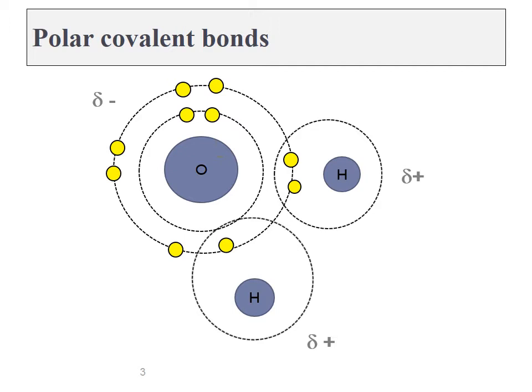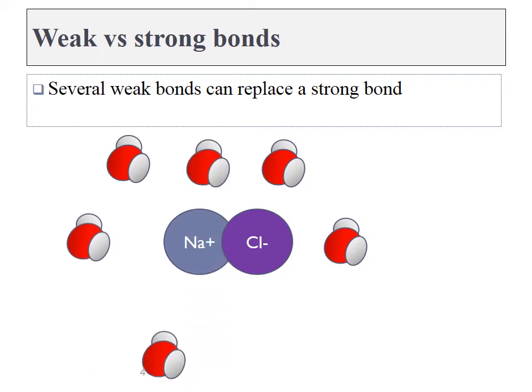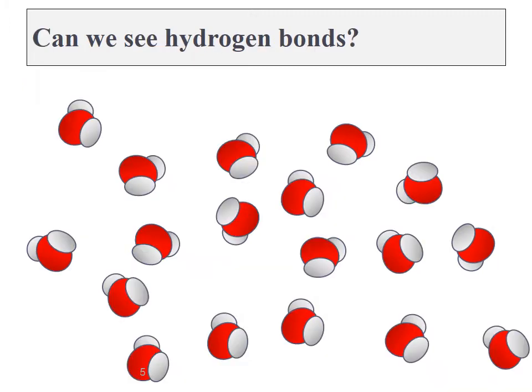The slight positives can bind to the slight negatives of other water molecules. Sodium chloride is held together by an ionic bond. This bond is not very strong and can easily be replaced by hydrogen bonds. The crystals of sodium chloride thus dissolve when placed into water. We can't see the hydrogen bonds. They don't last for very long, but we can see their effects.